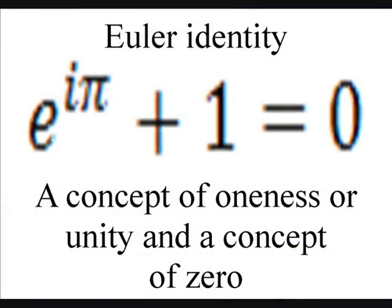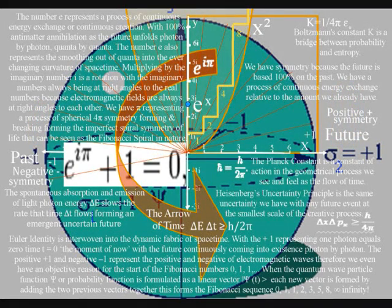One of the most beautiful equations known to man, Euler's identity, can be placed within the geometry of this process, representing the fabric of space and time. The one in Euler's identity represents one photon oscillation, and the zero represents t equals zero, the moment of now, within an individual reference frame. The letter i represents the imaginary numbers, and when they are multiplied by pi, it gives us a rotation that gives the letter E in the equation the value of minus one. The plus one and the minus one cancel out to equal zero, representing the moment of now.